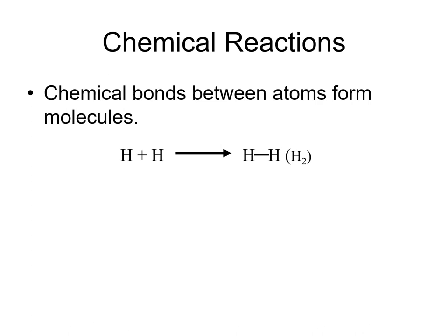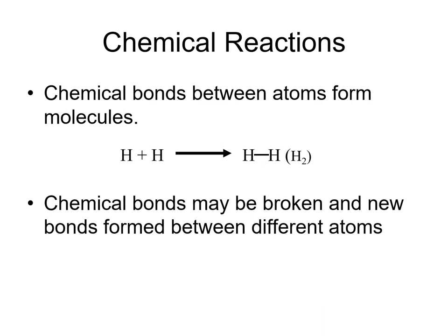The process of bonds forming or being broken is referred to as chemical reactions. Chemical bonds can form between atoms to form a molecule, as shown here where two hydrogen atoms combine chemically to form molecular hydrogen. We often indicate the bond between atoms as a dash, particularly for a covalent bond. Chemical bonds may also be broken and new bonds formed between different atoms — for example, running electricity through water breaks the bonds between hydrogen and oxygen, forming new bonds between oxygen atoms and between hydrogen atoms.